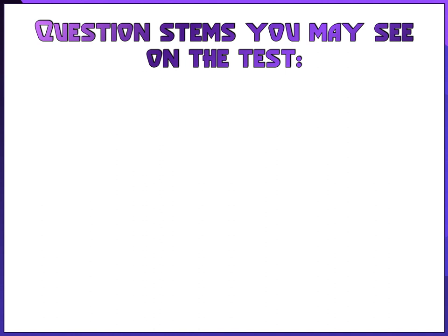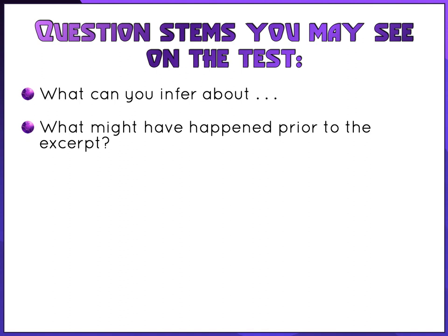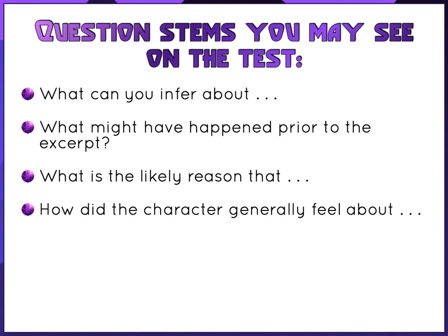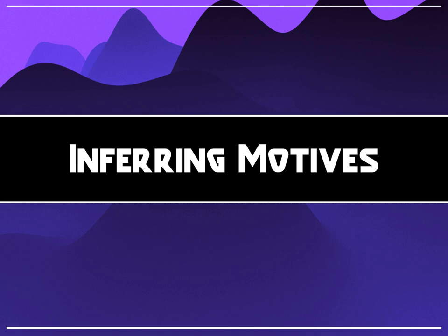These are GED question stems indicating they want an inference: 'What can you infer about?' — they want an educated guess. 'What might have happened prior to the excerpt?' — the word 'might' indicates possibility. 'What is the likely reason that?' — 'likely' instead of 'definite' means make a guess. 'How did the character generally feel about?' — feelings questions want you to infer from evidence. 'What can we assume?' — 'assume' means make a guess. You might also be asked to infer a character's motives — why someone does something — which the GED loves.